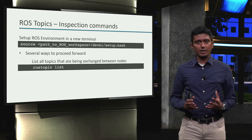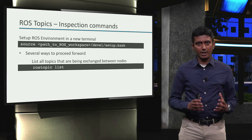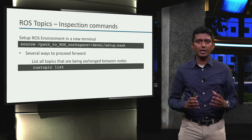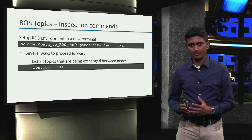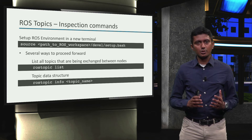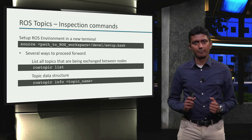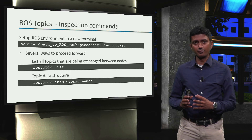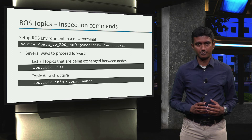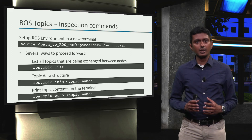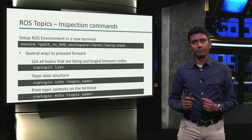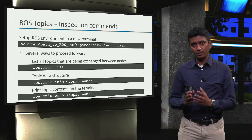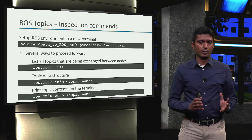The first command is `rostopic list`. This command prints a list of all topics being exchanged between active nodes in a ROS application. The second command is `rostopic info <topic_name>`, which prints information regarding the data structure used to store information in the specific topic. The last command is `rostopic echo <topic_name>`, which prints the contents of the specific topic on the terminal screen. Let us look at them one by one.